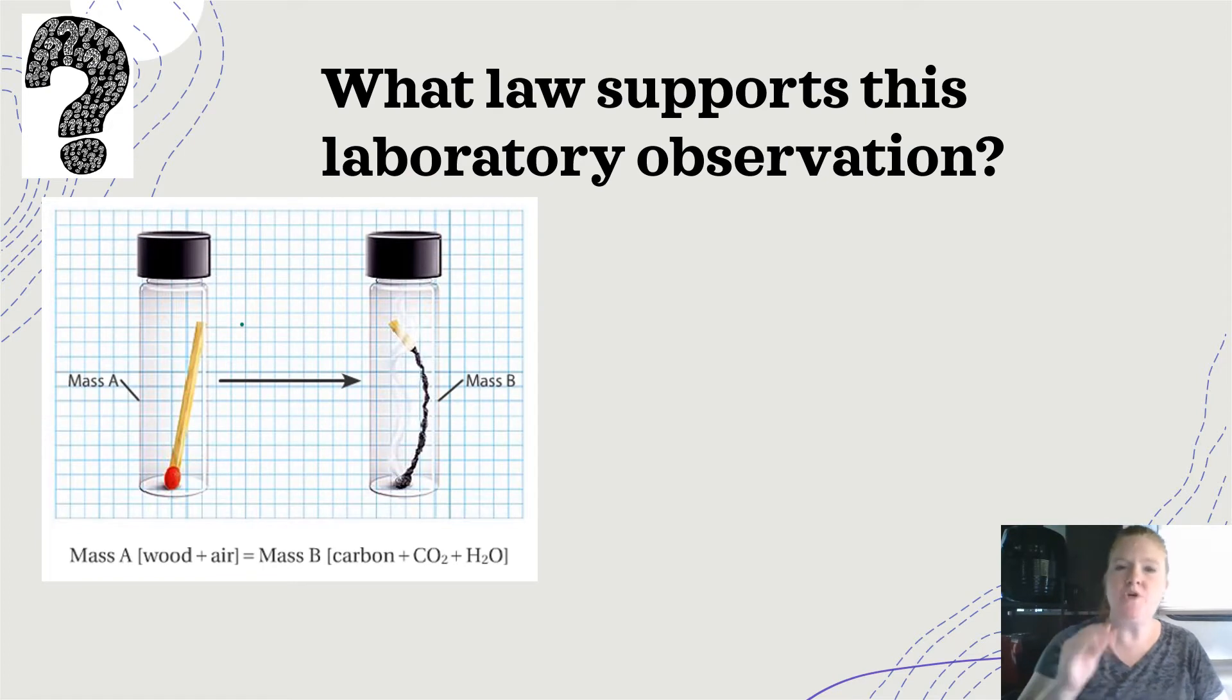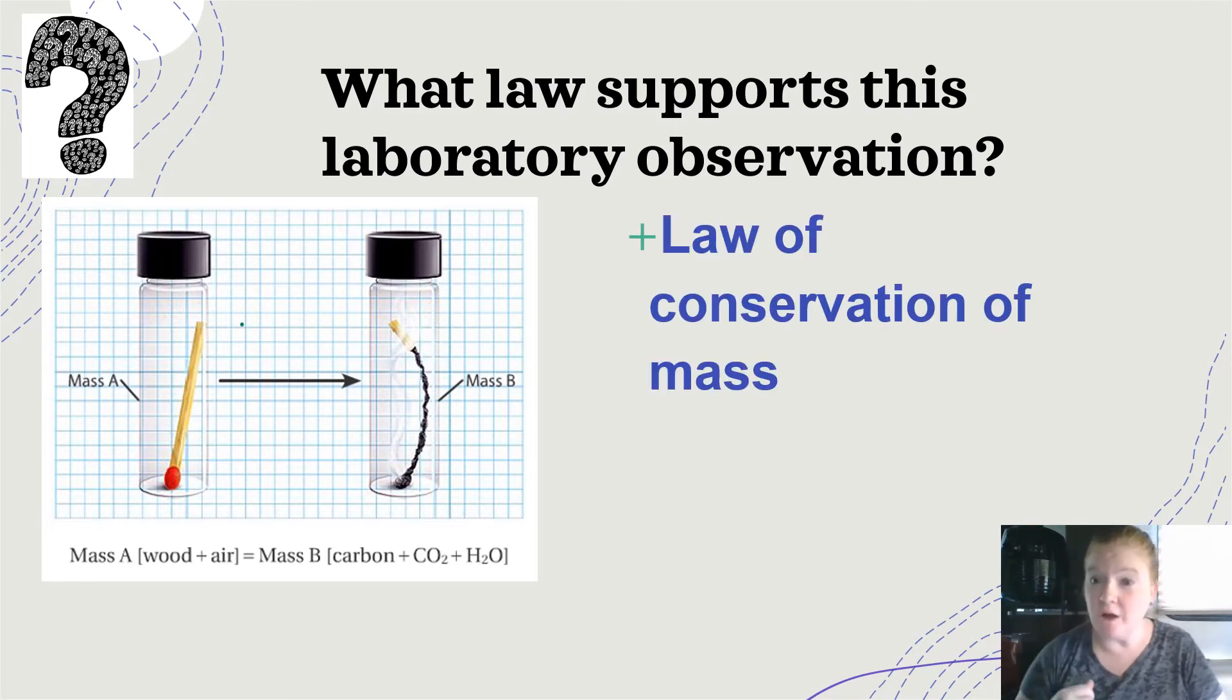Okay, so here is an image. And the question is, what law supports this laboratory observation? So it says the mass of A, which is the wood and air, is equal to the mass of B, which is the carbon plus carbon dioxide plus water. So what law is that? That's the law of conservation of mass, right? The mass of the reactants equals the mass of the products.